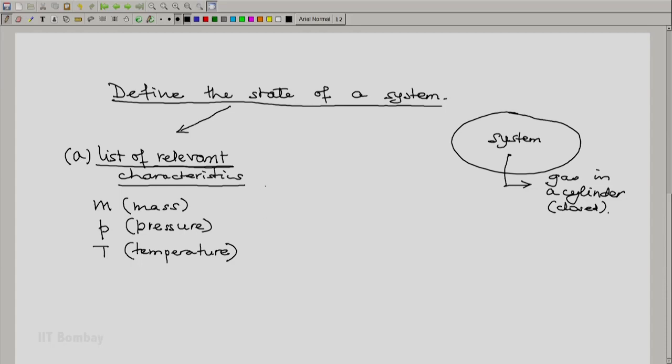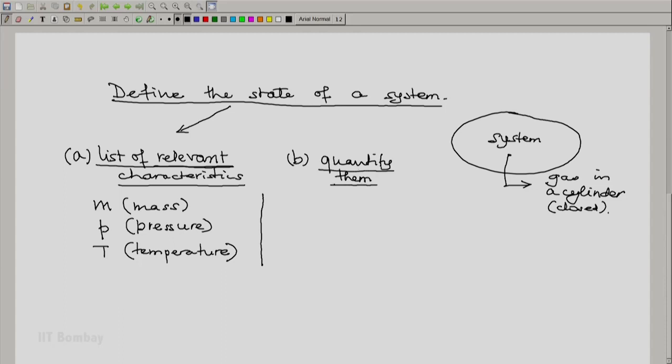So, after making a list of relevant characteristics, the second operation is to quantify. By quantification we mean measure or by hook or by crook somehow put a value on each of these relevant characteristics.